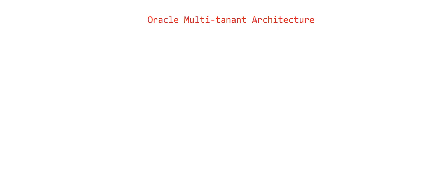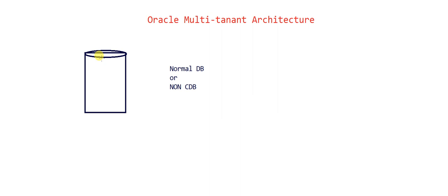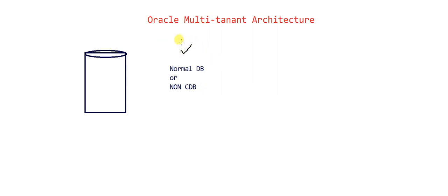Let's understand the terminology. Whatever database you had learned so far is a normal database — we can call it a Non-CDB, which stands for Non-Container Database. There was no container option. Whatever you studied till 11g is a Non-Container Database; there is no concept of a container in it. One important thing: a Non-Container Database cannot be converted into a Container Database. When you install 18c, there is an option to create a container database during installation — if you don't pick that option, you can't create a container database from a non-container.